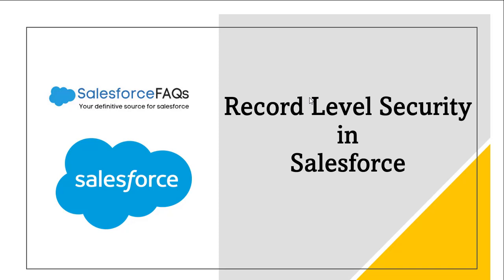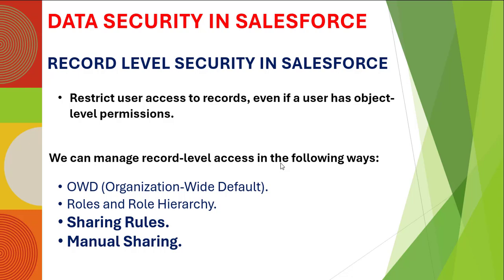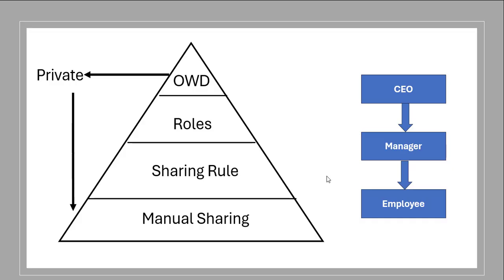Hello everyone and welcome to the channel. In this video we will continue with record level security in Salesforce. We will see sharing rules and manual sharing in Salesforce. In the previous video we have seen organization-wide defaults, then roles and role hierarchy in Salesforce. We will now see sharing rules and manual sharing. The video link for OWD and roles is given in the description box. We can only use roles, sharing rules, and manual sharing on objects where OWD is private.